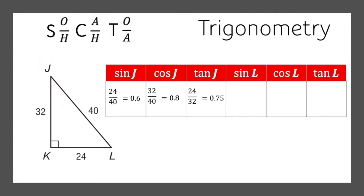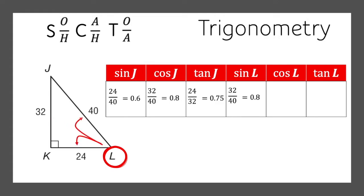Now let's do all the same things but from the perspective of L. The sine of L, opposite divided by hypotenuse, 32 divided by 40, is 0.8. Cosine of L, adjacent divided by hypotenuse, 24 divided by 40, which is about 0.6. And the tangent of L, opposite divided by adjacent, 32 divided by 24, which is about 1.33.